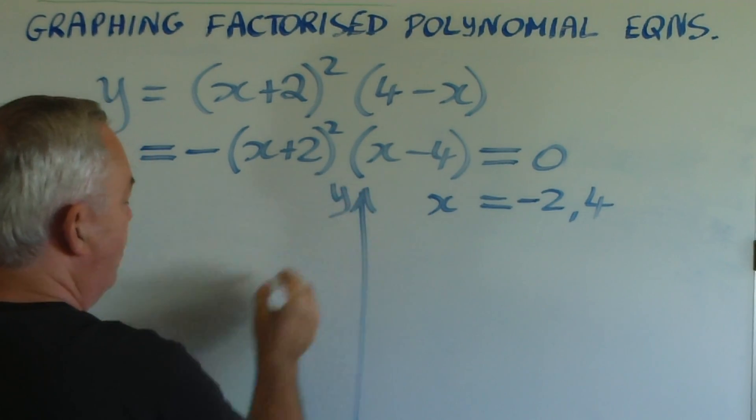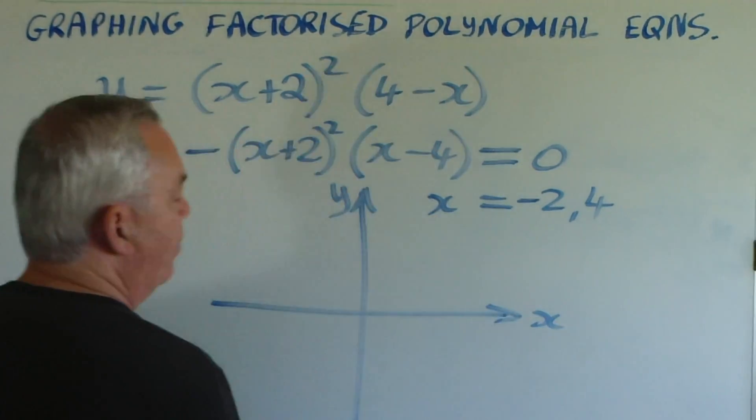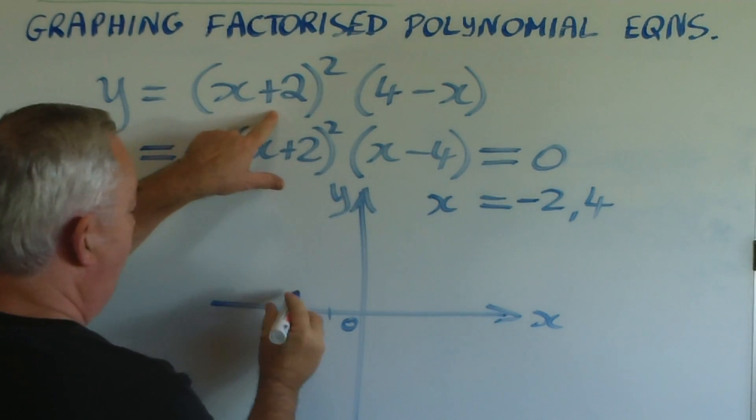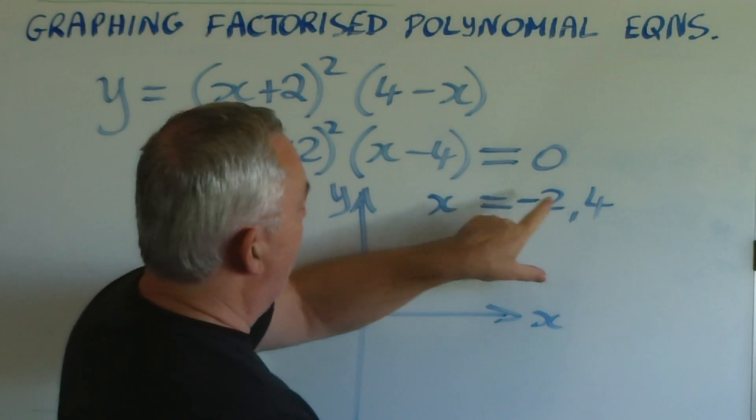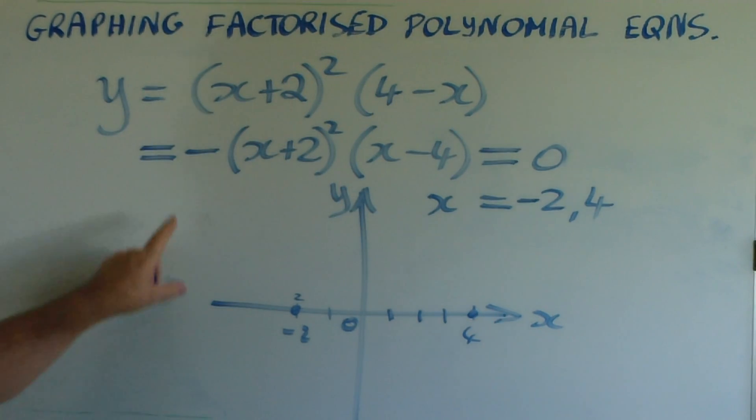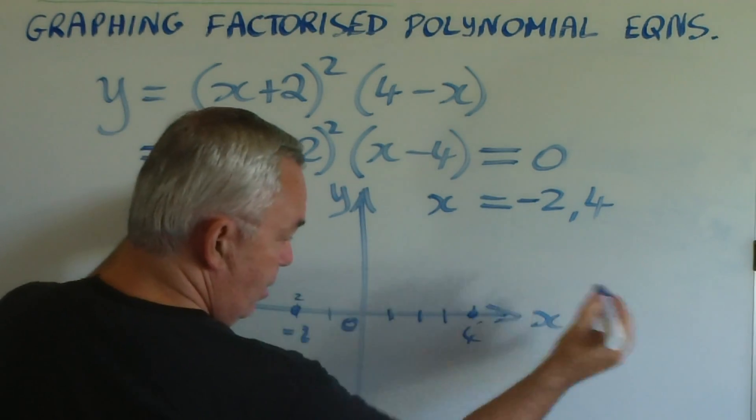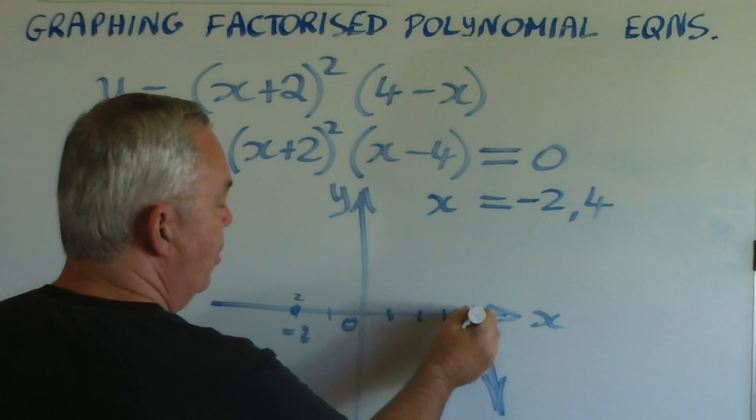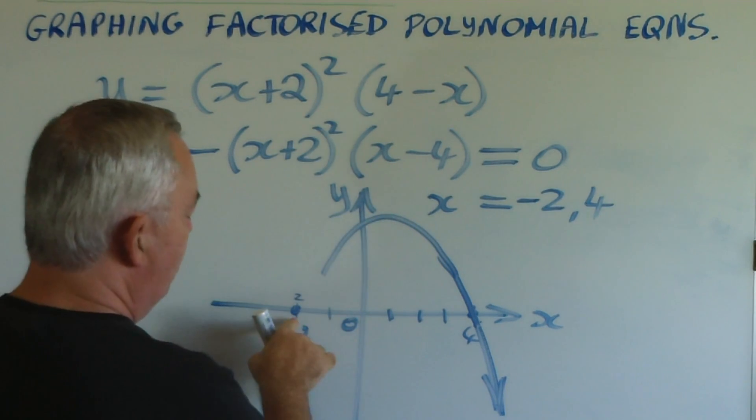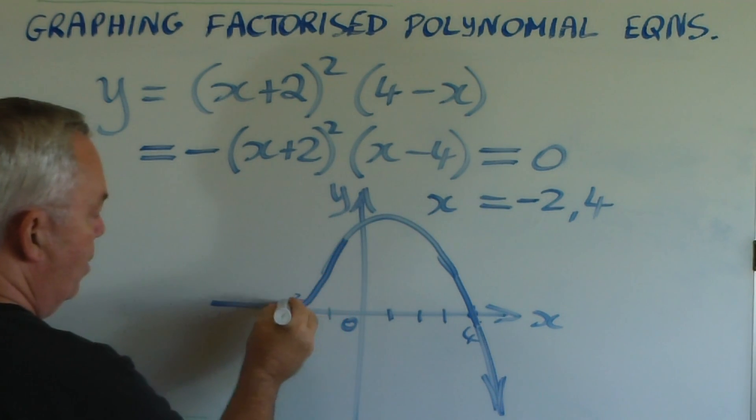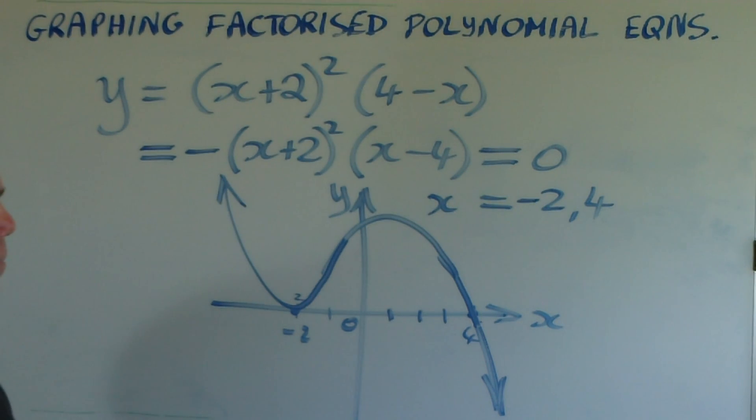And to graph them, we have one root at negative two. It is a double root, so I put a little two above it. I have another root at four. It is a normal root. But the minus sign means that my graph starts, on the right-hand side, by going down. It comes up through the normal root at four. It wants to come down through the root at minus two, but being a double root, it behaves like a parabola. And there is the shape of that particular cubic equation.